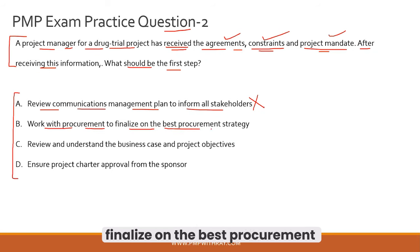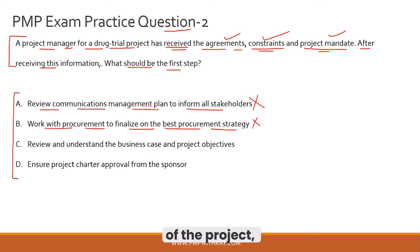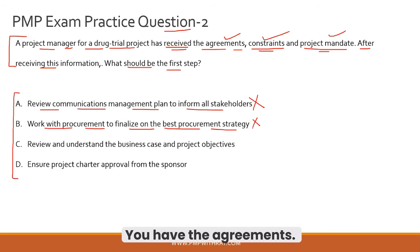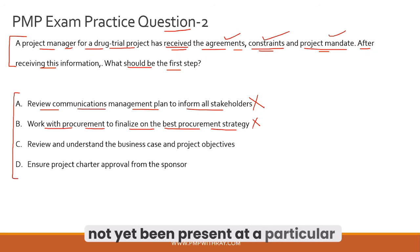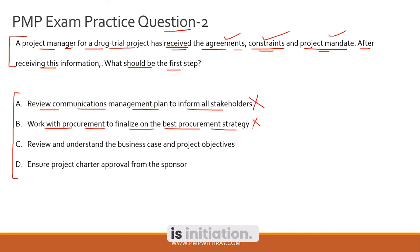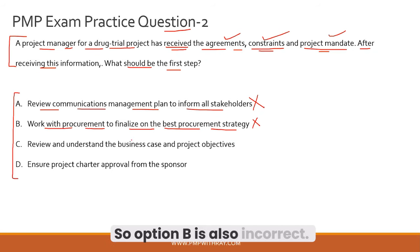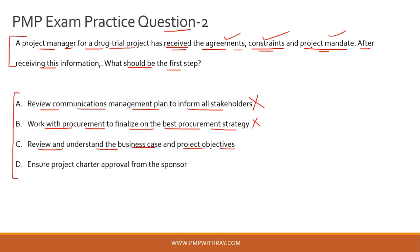Option B — work with procurement to finalize the best procurement strategy — is also incorrect. Finalizing procurement strategy is part of the planning stage where you develop the procurement management plan. We are still at initiation. This is another classic wrong answer choice directing you to consider something not yet created at the current project stage.